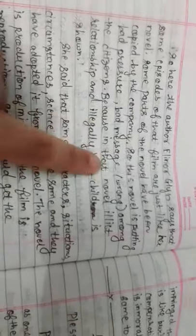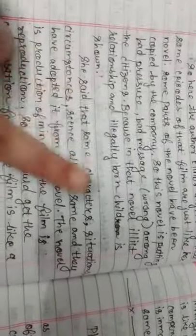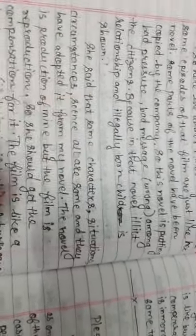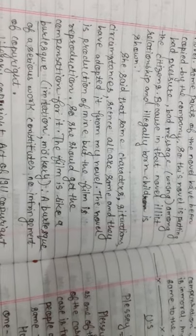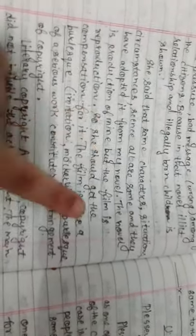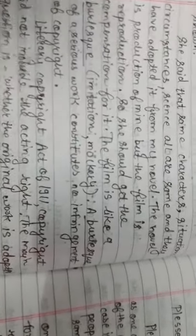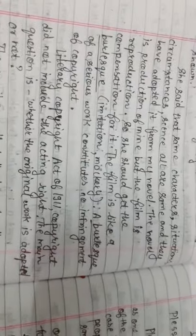Eleanor Glenn is saying that some episodes of that film are just like her novel. The same characters, situations, circumstances, and scenes are all the same and they have adopted it from her novel. The novel is the production of hers, but the film is reproduction. She should get compensation for it.